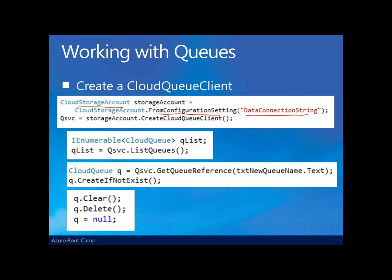We'll need this cloud storage account object whether we're working with queues, tables, or blobs. Once we've got the cloud storage account object, we'll need to create what's known as a cloud queue client, here called queueservice. With the queueservice, or cloud queue client object, we're able to do things like get a list of all the queues. Or, if we know the name of a particular queue, we can get a reference to that queue with get queue reference and the actual queue name. With that, we've got a cloud queue object.